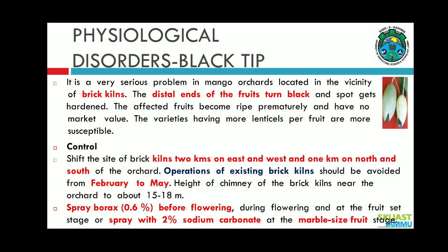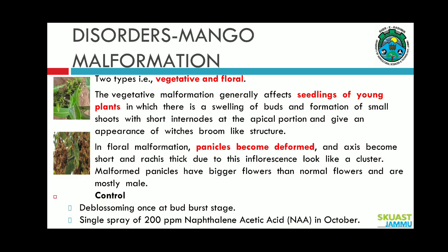For control of black tip, shift the site of brick kilns two kilometers on east and west and one kilometer on north and south of the orchard. Operations of existing brick kilns should be avoided from February to May. The height of the chimney of brick kilns near the orchard should be about 15 to 18 meters. Spray borax 0.6 percent before flowering, during flowering, and at fruit set stage. Spray of 2 percent sodium carbonate at marble size fruit stage will control this physiological disorder.